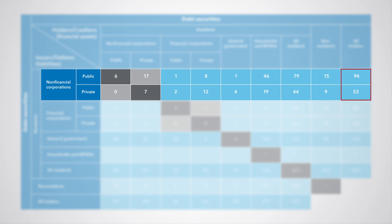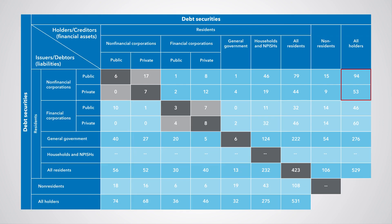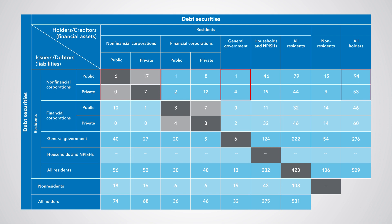In total, non-financial corporations issued debt securities of 147, as reflected in the first two rows (that is 94 plus 53). Their liabilities in the form of debt securities to other non-financial corporations are 30 (that is 6 plus 17 plus 0 plus 7), to financial corporations 23 (that is 1 plus 8 plus 2 plus 12), to general government 5 (that is 1 plus 4), to households and non-profit institutions serving households 65 (that is 46 plus 19), and to the rest of the world 24 (that is 15 plus 9).